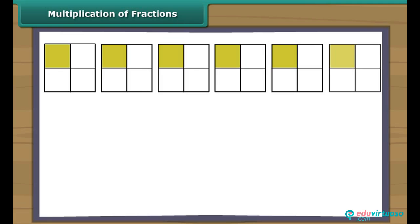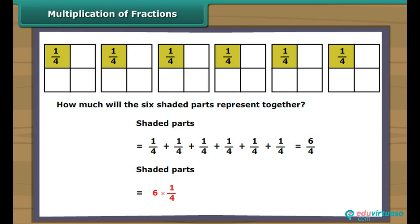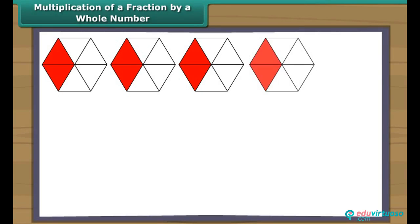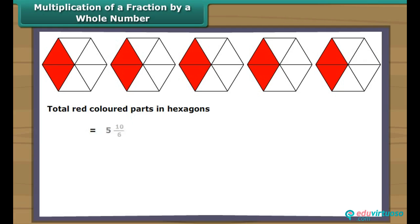Multiplication of fractions: Look at the picture — all the squares have a shaded part, and each shaded part is one-fourth of a square. To find how much six shaded parts represent together, we can add all the parts or multiply the number of shaded parts by each shaded part. Looking at hexagons where two-sixths of each is red, in total five hexagons give ten-sixths red, found by multiplying 5 by two-sixths. To multiply a whole number by a proper or improper fraction, multiply the whole number with the numerator, keeping the denominator the same.